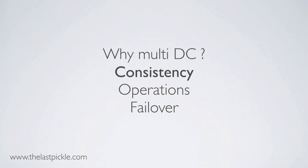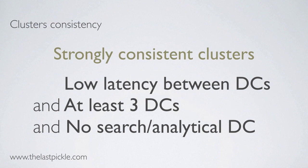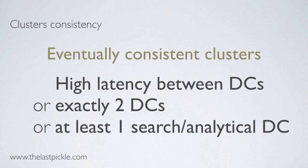Let's talk about consistency in multi-DC clusters. We can separate two families of clusters: strongly consistent clusters, which have low latency between DCs, must have at least three DCs, and no search or analytical DCs which have unpredictable latencies. And eventually consistent clusters, which have high latency between DCs, when you have exactly two DCs, or when you have at least one search or analytical DC.